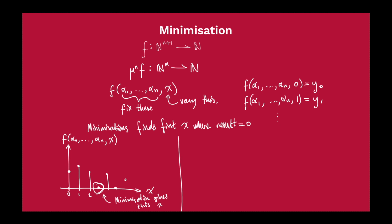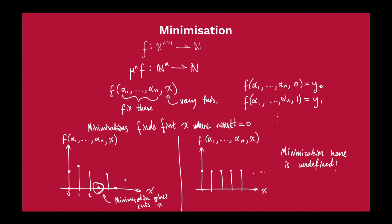Let's look at another case. Again one axis is f with our alphas and x, and the other axis is x. What happens if the result never goes to 0? If the result is always some constant, then the minimization is undefined. And we've just found our first partial function — our first function where the result does not necessarily exist.